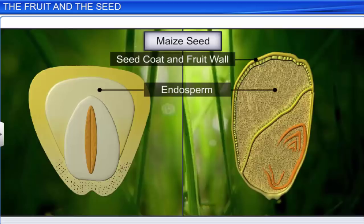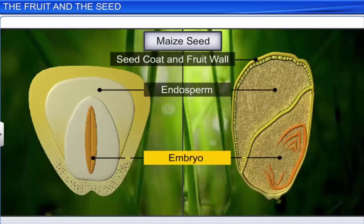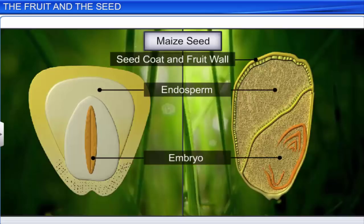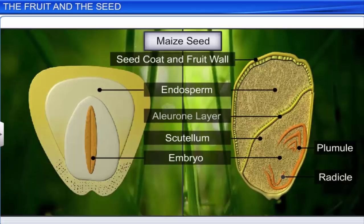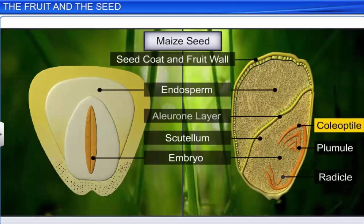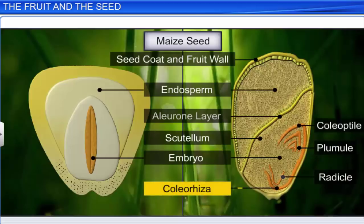The endosperm of maize is bulky and stores food, while the embryo is tiny and is placed in a groove at one end of the endosperm. The embryo is separated from the endosperm by a proteinous layer known as the aleurone layer, and is made up of a single large shield-shaped cotyledon called the scutellum. The embryo also has a short axis with a plumule and a radicle, where the plumule is enclosed by a sheath called the coleoptile and the radicle by a sheath called the coleorhiza.